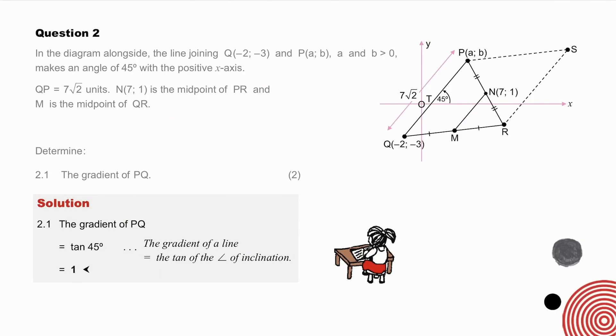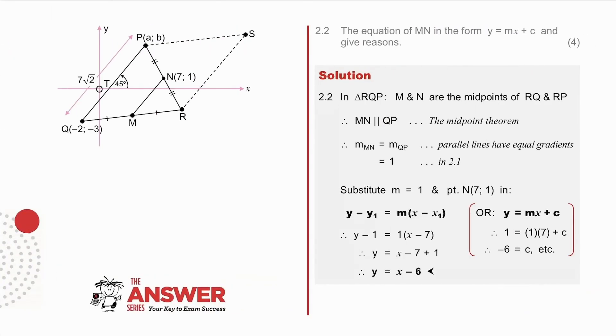Pause at any stage while checking your solutions in the next few slides. The gradient of PQ is simply the tan of the angle of inclination, and therefore equal to 1. The equation of MN. We have the point N, and we know that the gradient of MN equals the gradient of PQ, as in parallel lines. So we substitute M equals 1 and the point in either of the forms of the equation of a straight line, and arrive at this answer.